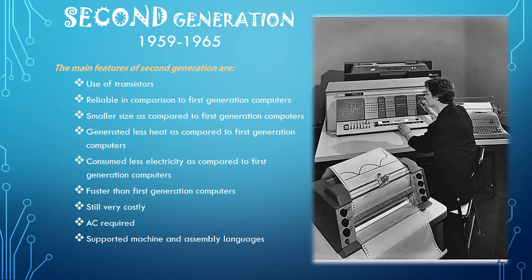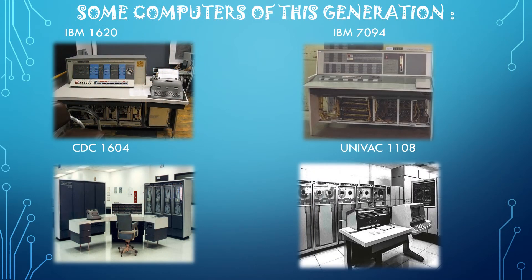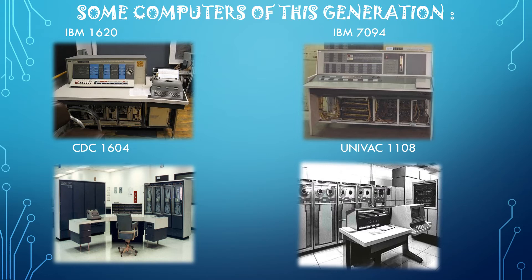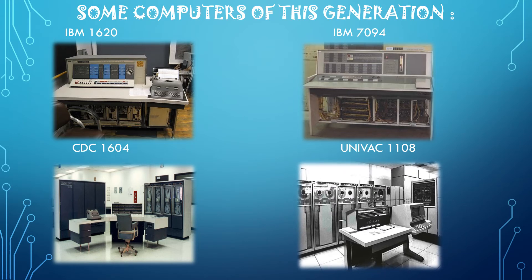The operating systems used were batch processing and multi-processing. Examples of second generation computers include the IBM 1620, IBM 7094, CDC 1604, and UNIVAC 1180. As you can see, they were really much smaller compared to first generation computers.